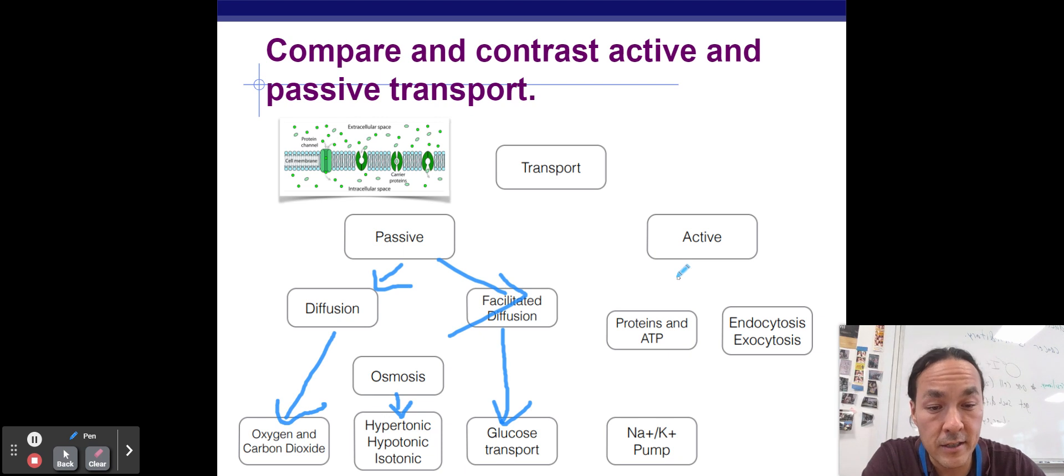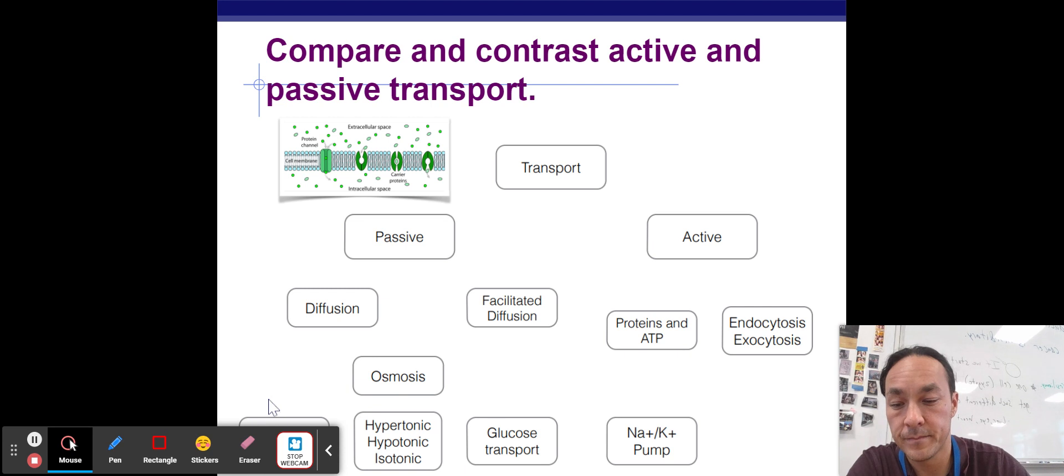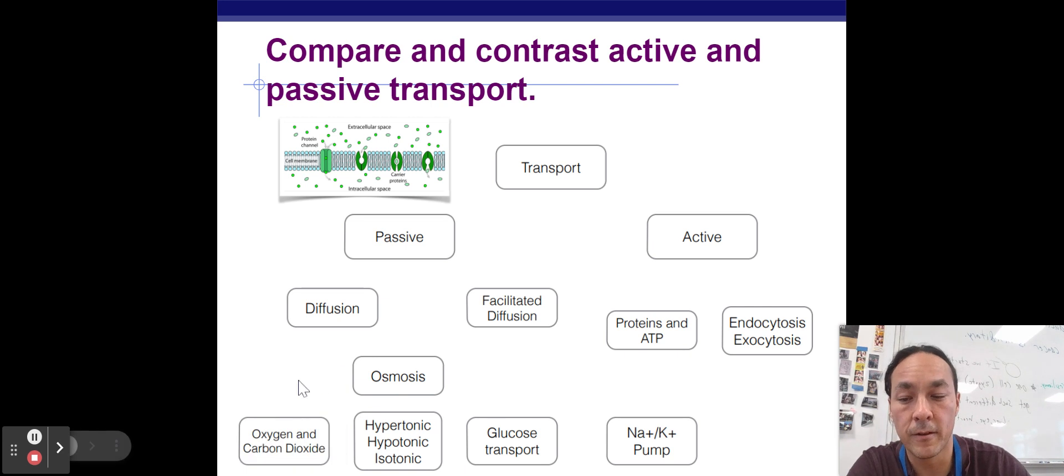Active transport is going against the concentration gradient, or from low to high. And that requires energy in the form of ATP. It can also involve endocytosis and exocytosis, which because a vesicle is being moved, the movement of that vesicle, like moving a TV or something, requires energy. I have these in more depth coming up.